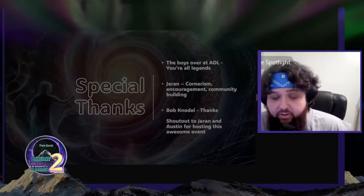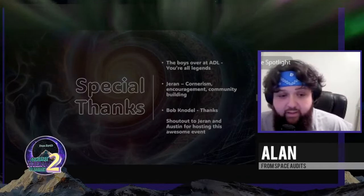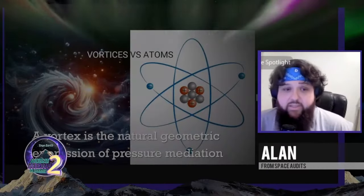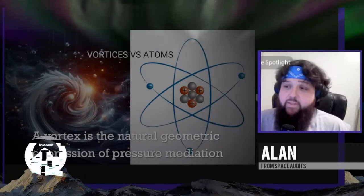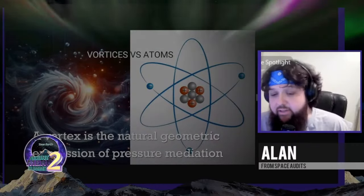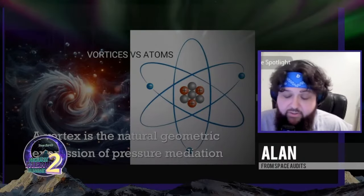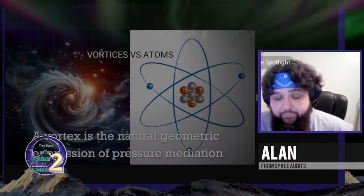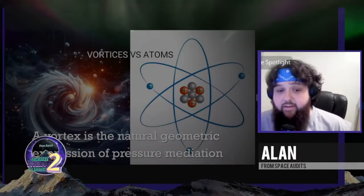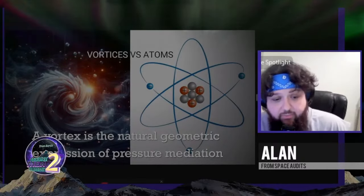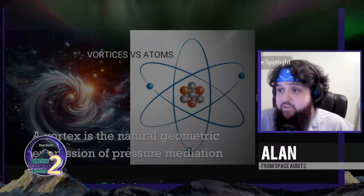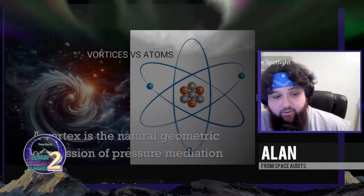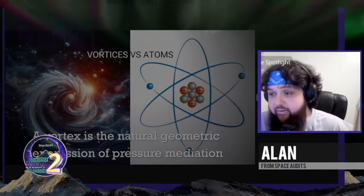Shout out to Jaren and Austin for hosting this awesome event and bringing everyone together — more on that community building. Thank you guys. So with that said, let's look at the historicity of vortexes versus atoms. We have vortices in the atomic theory. We're all told about the atomic theory most of the time, and we're not really told about the vortex theory. We're going to learn about the ether and how vortexes form naturally in nature. The vortex is the natural geometric expression of pressure mediation — we find this in all forms of nature, from large weather systems all the way down to the human heart.